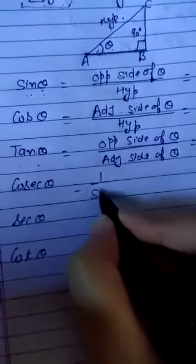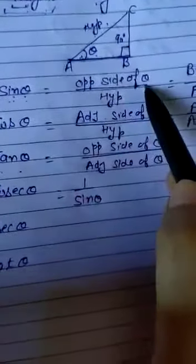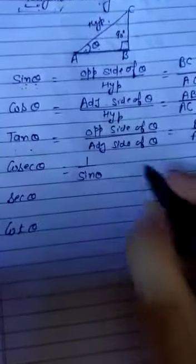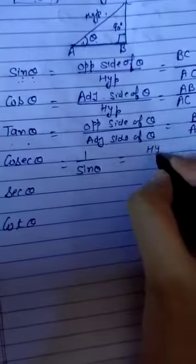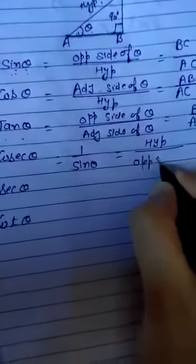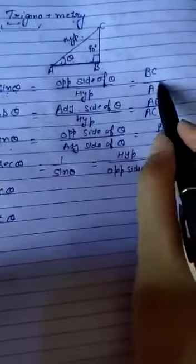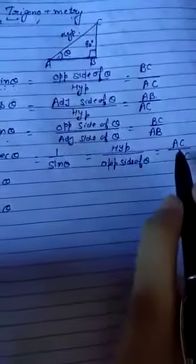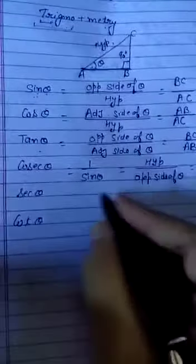Cosecant theta is always the reciprocal of sin theta. It means if the value of sin theta is opposite side of theta divided by hypotenuse, then the value of cosecant theta is hypotenuse divided by opposite side of theta. The hypotenuse value is AC and the opposite side of theta is BC. So, cosecant theta equals AC upon BC — it is only the reciprocal of sin theta.